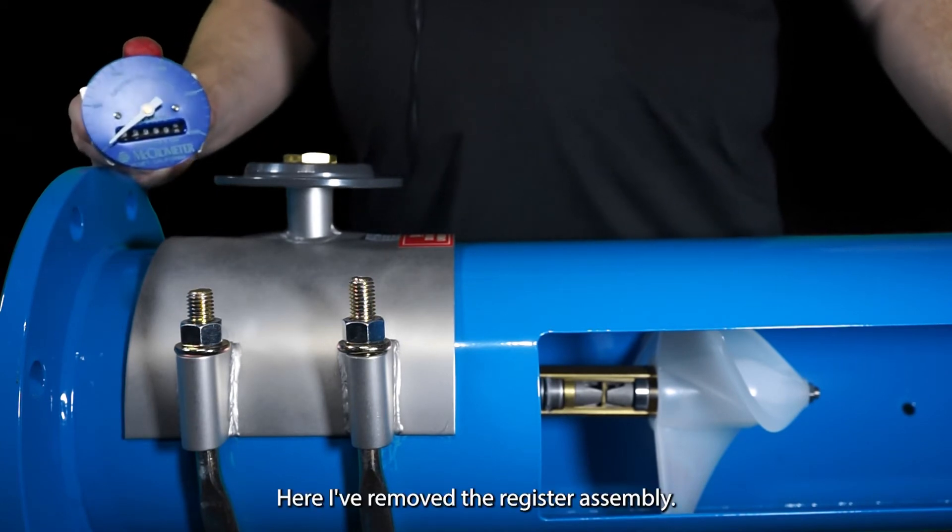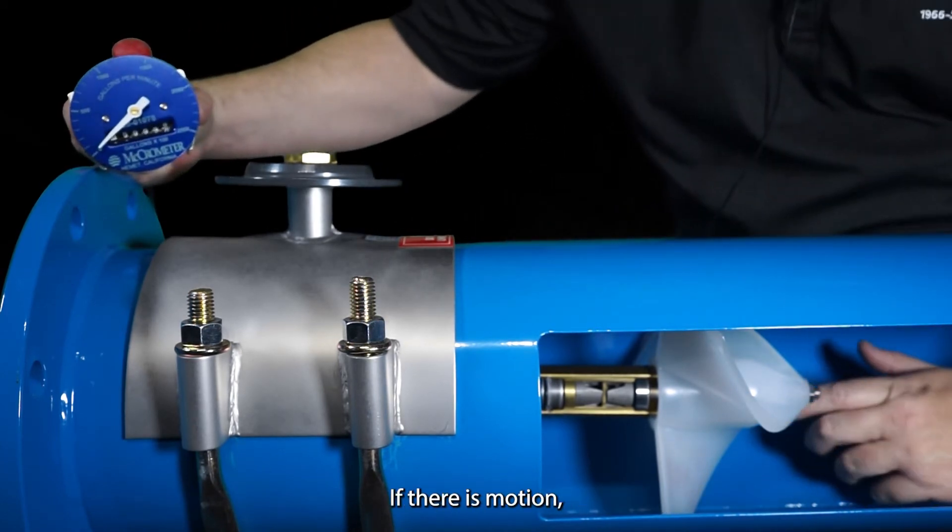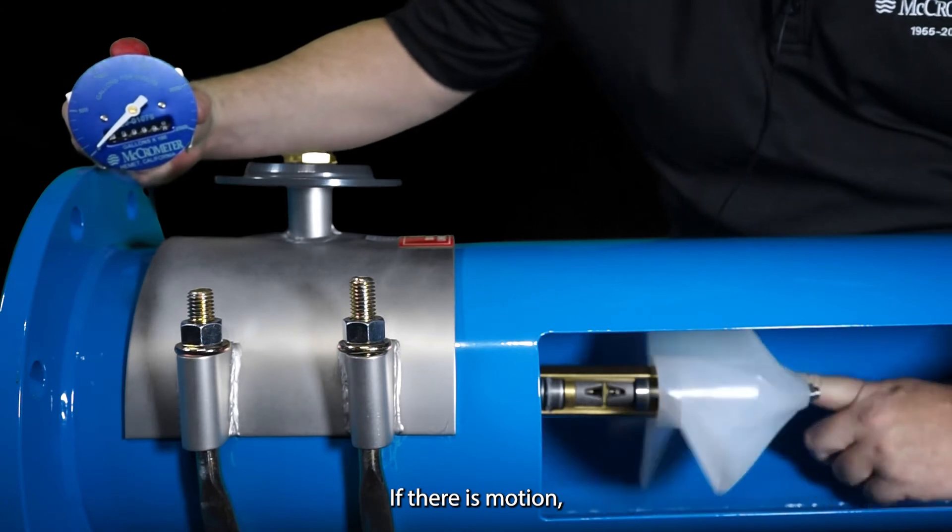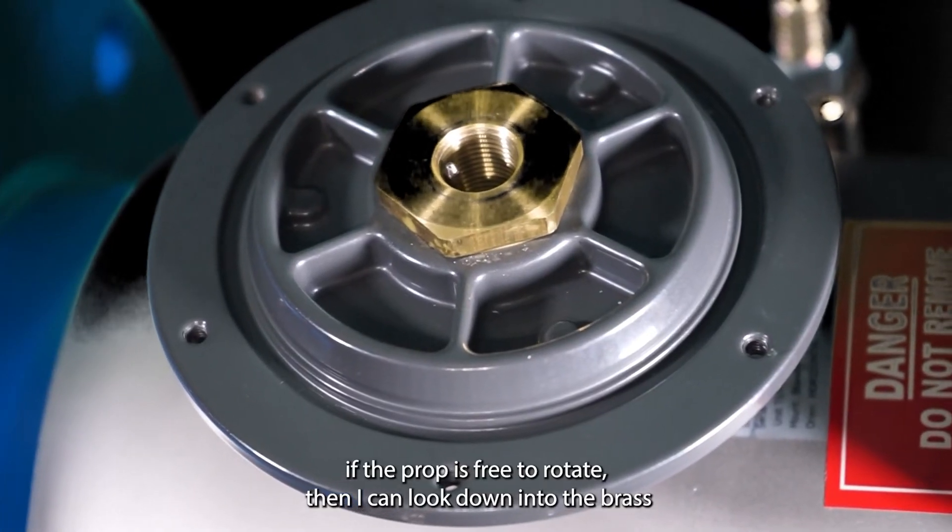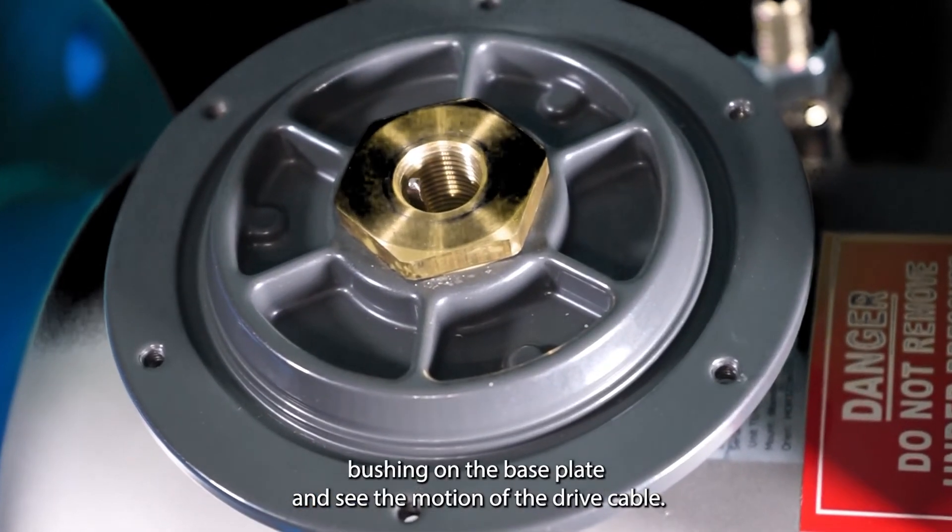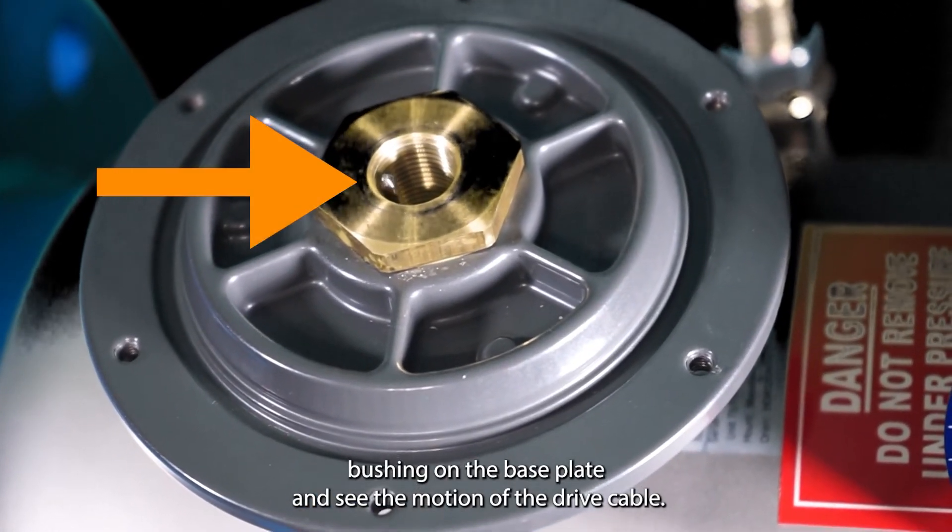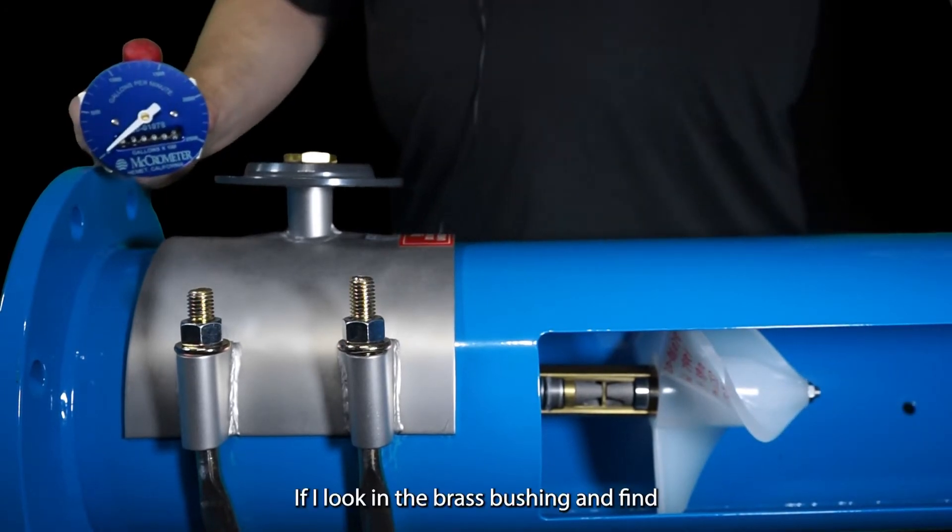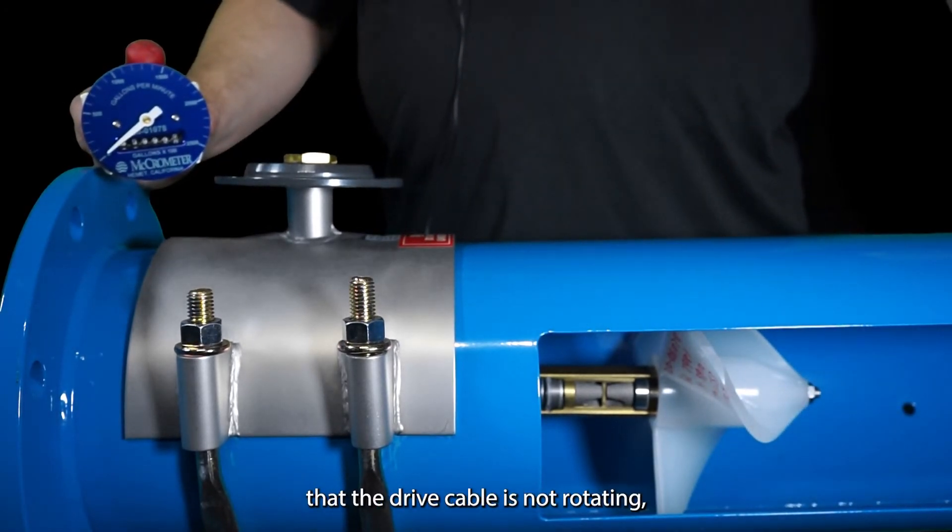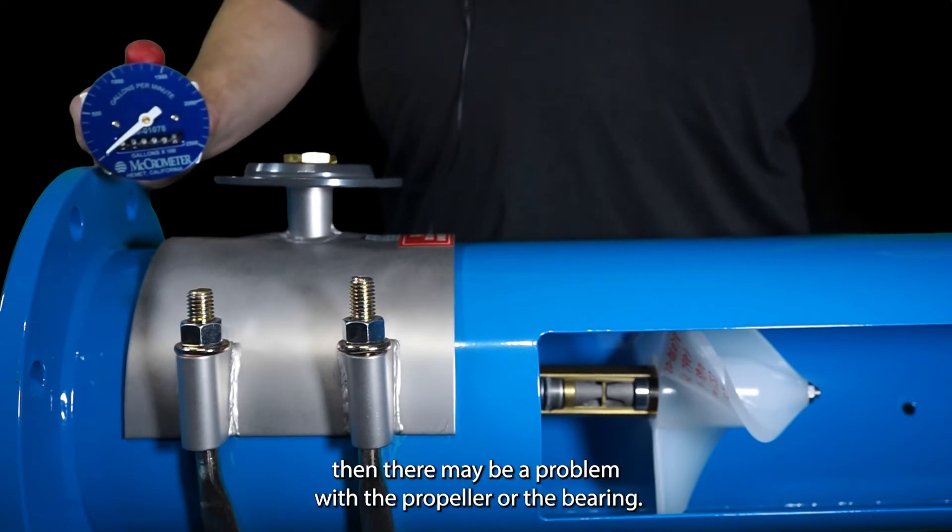Here I've removed the register assembly. If there is motion, if the prop is free to rotate, then I can look down into the brass bushing on the base plate and see the motion of the drive cable. If I look in the brass bushing and find that the drive cable is not rotating then there may be a problem with the propeller or the bearing.